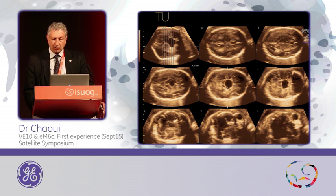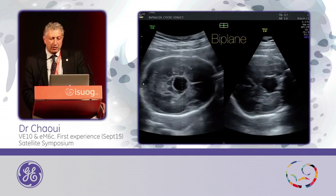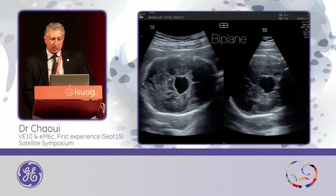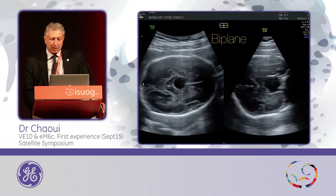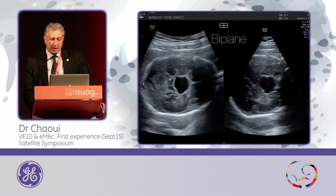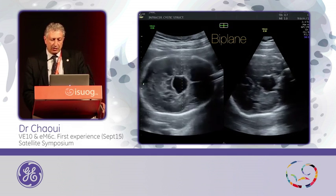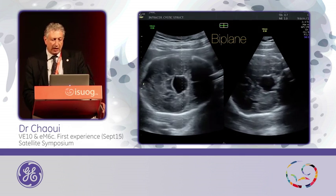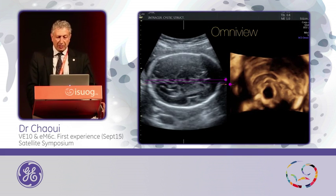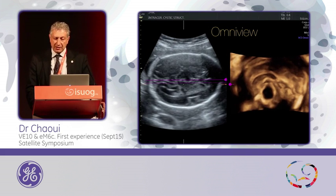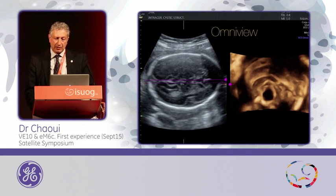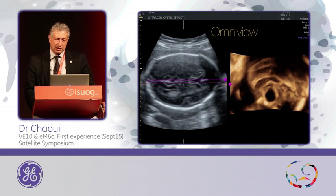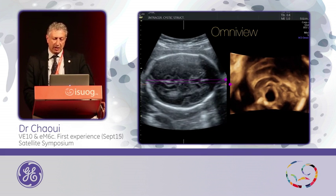And then you can use the biplane to see the surrounding structure, and you see the shape is cystic or circular in all directions, and you see here the cortex appears well. Then you can use OmniView to see the relationship of this cyst in comparison to the corpus callosum — meaning it is just under the corpus callosum, where our vein of Galen would be present in the posterior part.